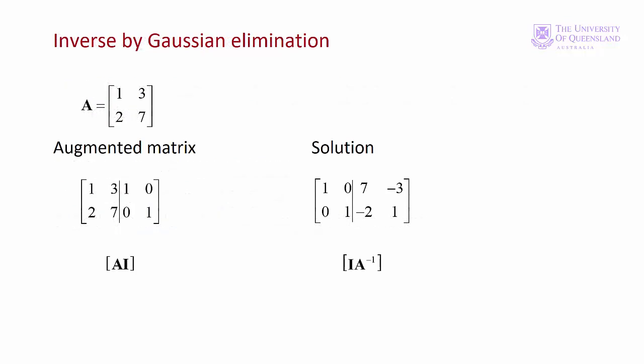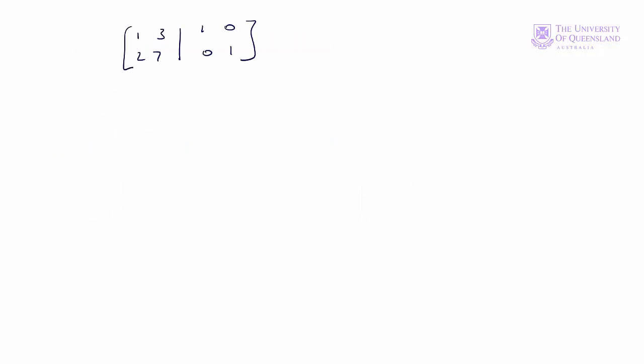Here is a small example before we return to the system of three equations. We want to find the inverse of matrix A = [1, 3; 2, 7]. We form the augmented matrix with A on the left and the identity on the right. We already have a 1 in the 1,1 position, so next we eliminate the 2 in the 2,1 position. New row 2 equals row 2 minus 2 times row 1.